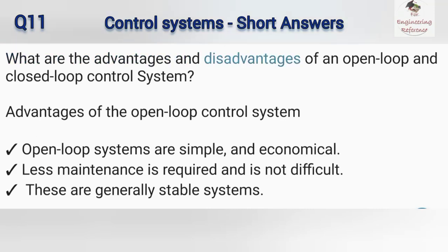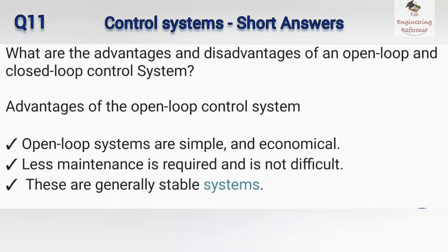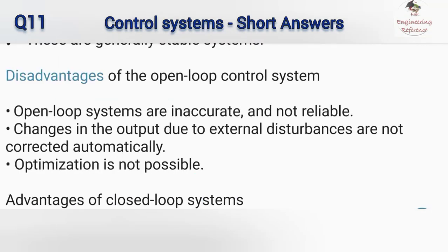What are the advantages and disadvantages of open loop and closed loop control systems? Advantages of the open loop control system: open loop systems are simple and economical, less maintenance is required and is not difficult, and these are generally stable systems. Disadvantages of the open loop control system: open loop systems are inaccurate and not reliable, changes in output due to external disturbances are not corrected automatically, and optimization is not possible.